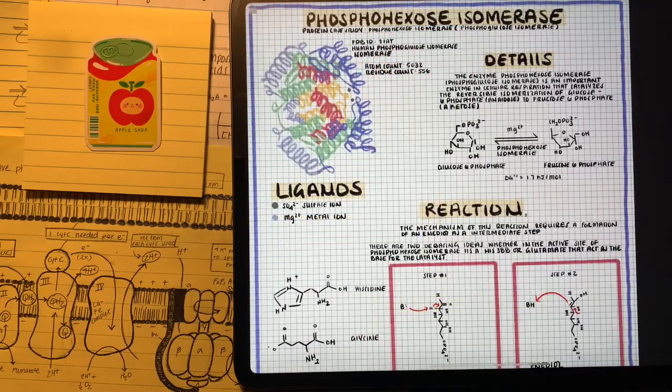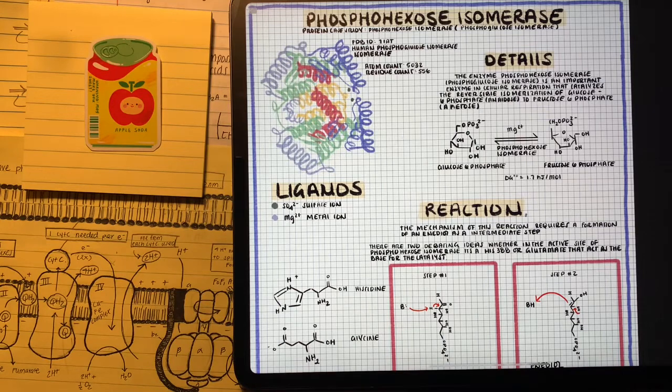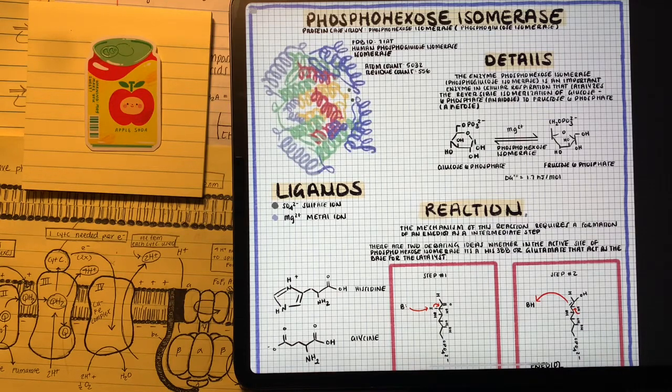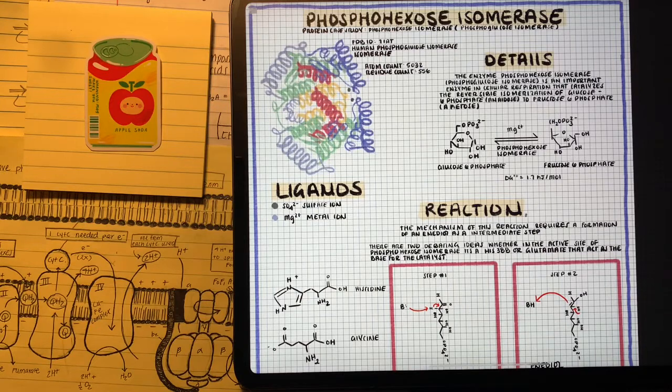Our second enzyme complex in glycolysis is phosphohexoisomerase, converting glucose 6-phosphate into fructose 6-phosphate. I know this process isn't energetically favorable, but the payoff is going to be worth it throughout glycolysis.